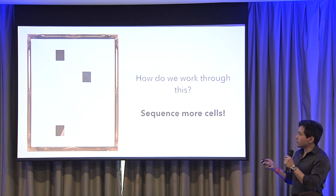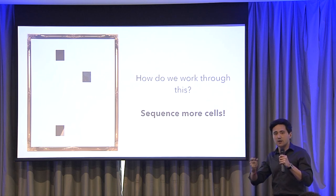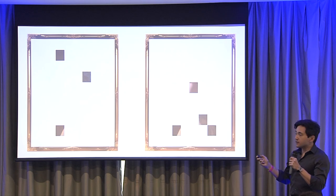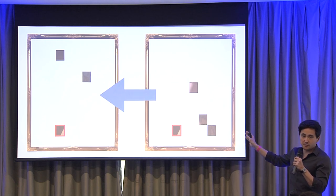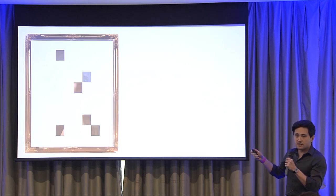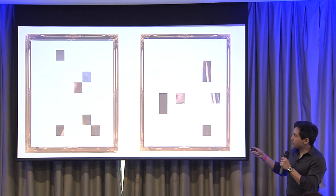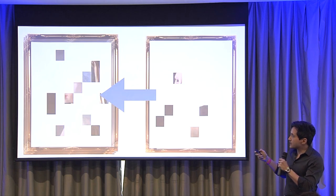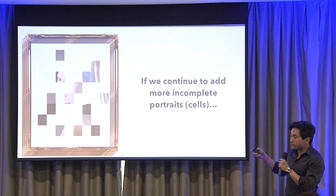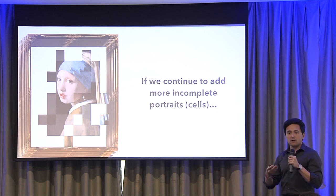So what do we do about this? We sequence more cells. As long as they're in the same state, as long as you're looking at the same type of cell with the same identity, you can just do this again. As long as there's some shared identity between them, if we take this picture and overlay it on top, we start to see a bit more of the picture. We repeat this again and again, and eventually we start to see a better picture of what the cell state is.